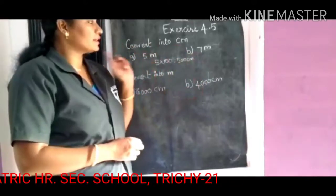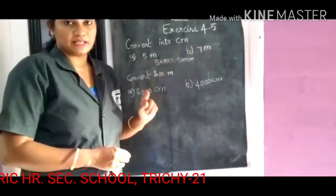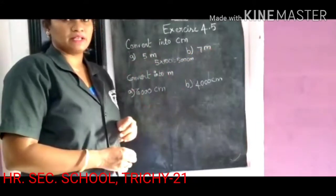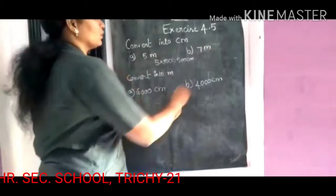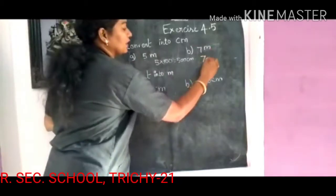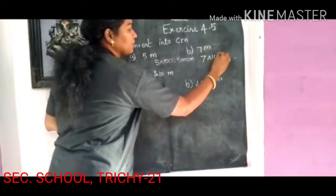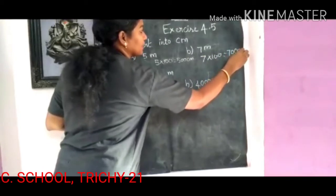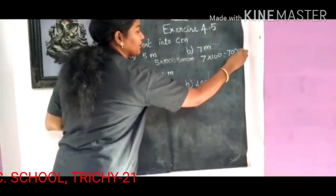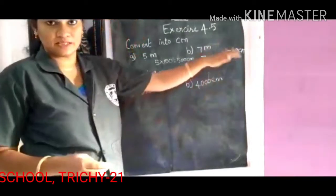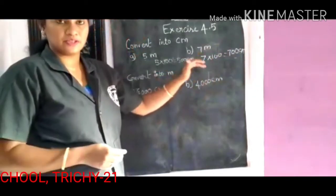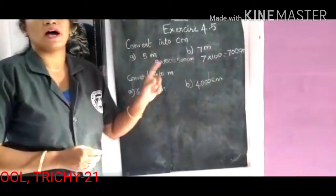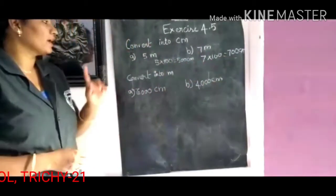The same thing: 7 meter. You want to convert to centimeter. So 7 multiplied by 100 equals 700 centimeter. The first rule: 1 meter equal to 100 centimeter.